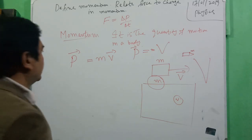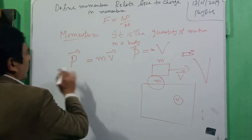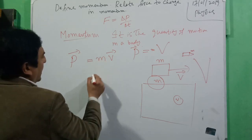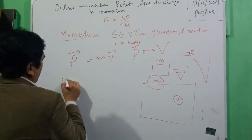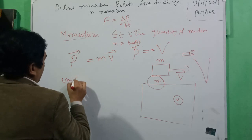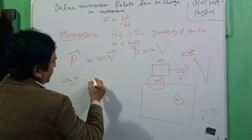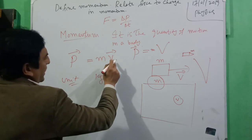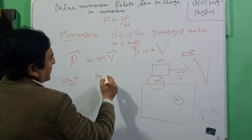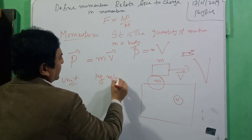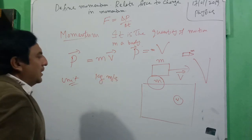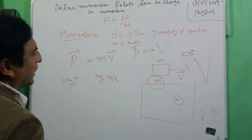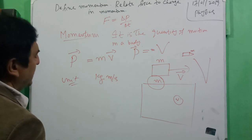What is the unit of momentum? The unit of mass is kilogram and the unit of velocity is meter per second. So the unit of momentum is kilogram meter per second.